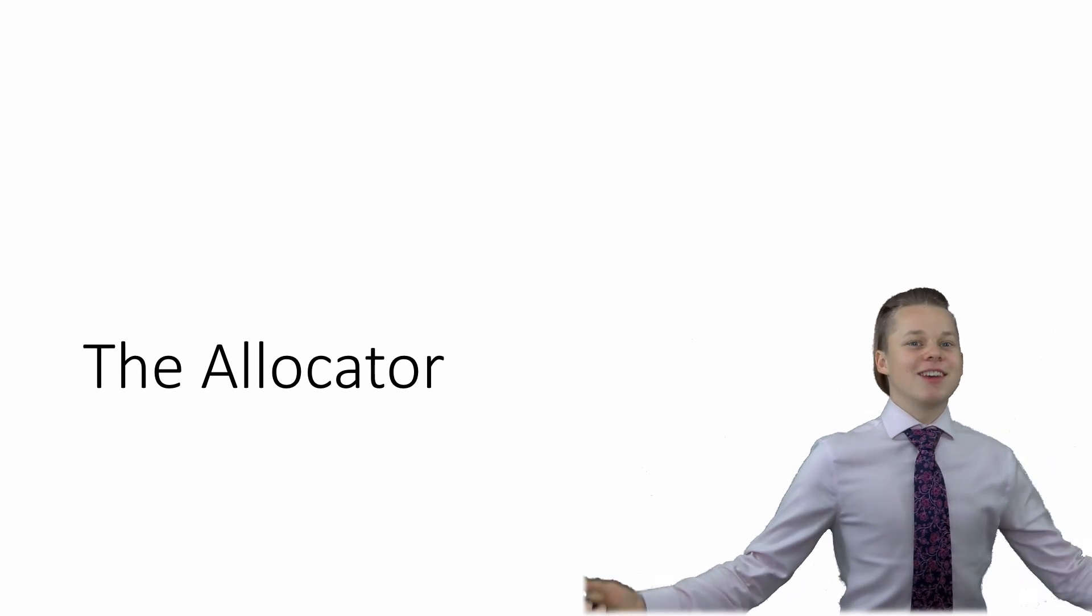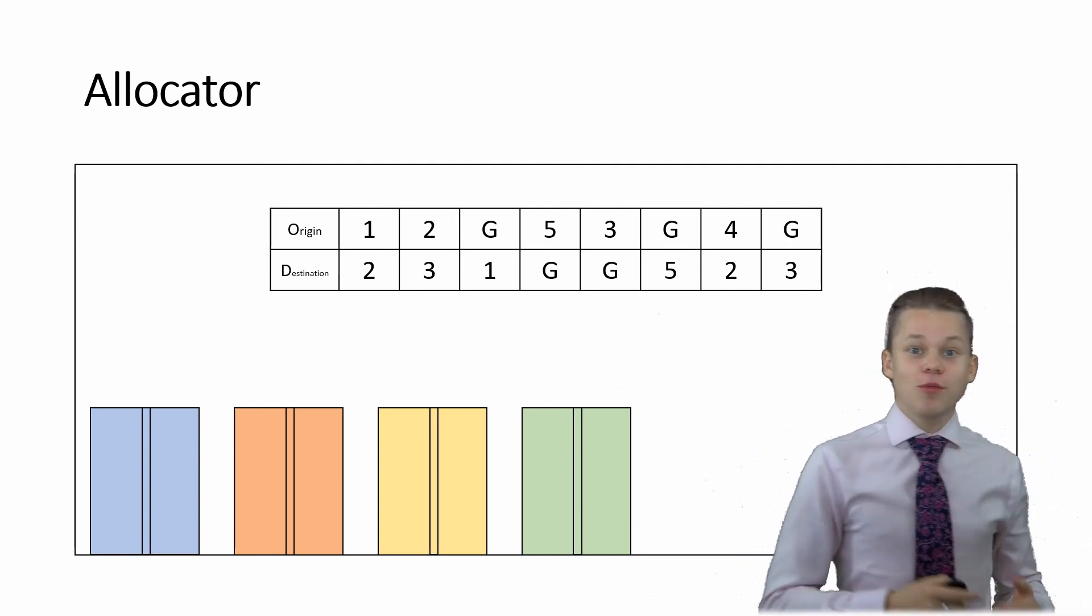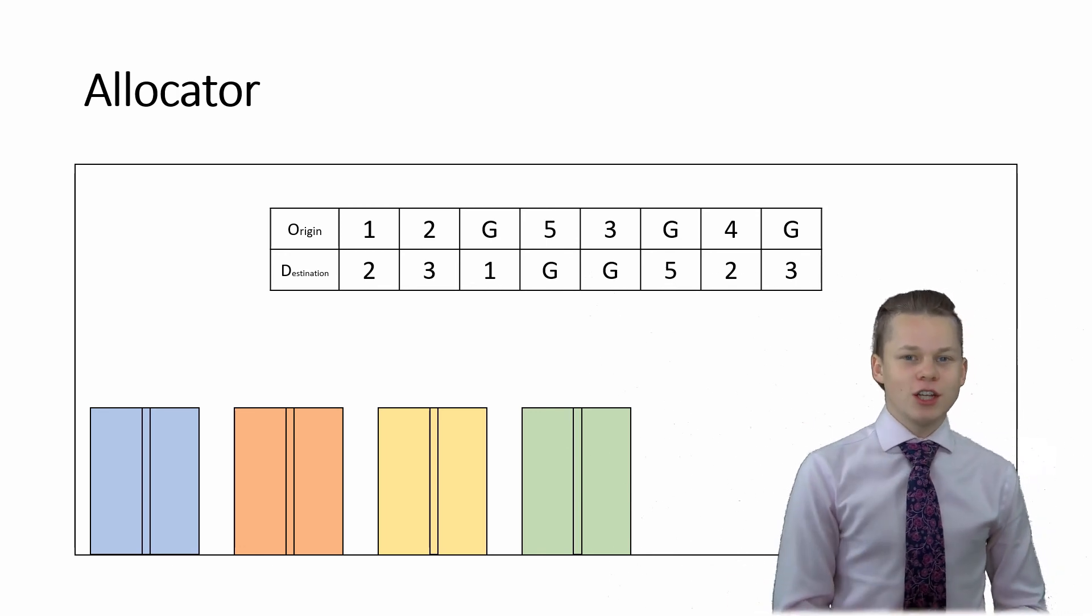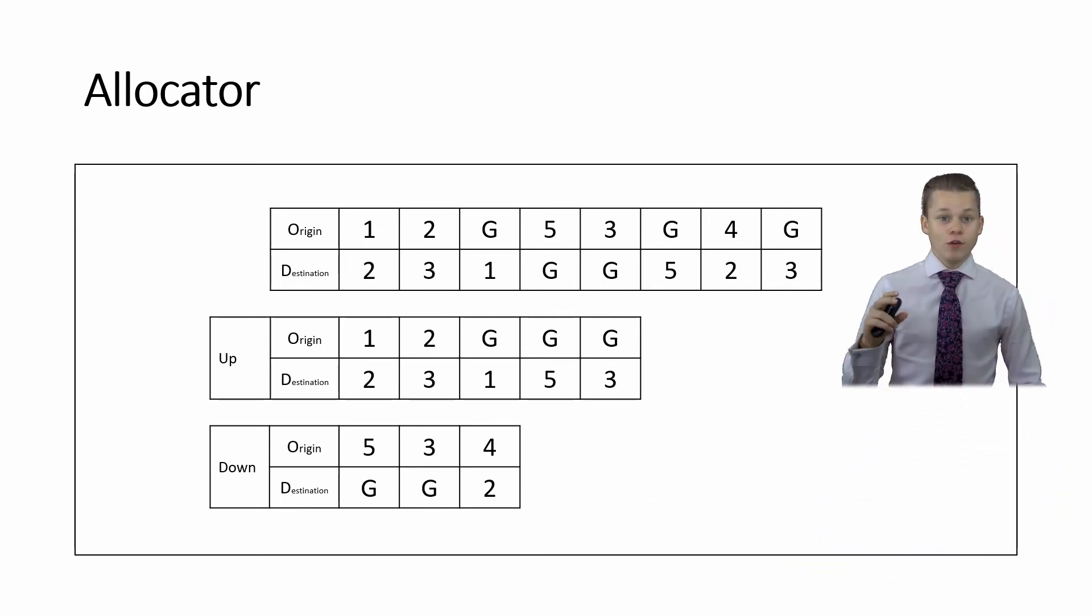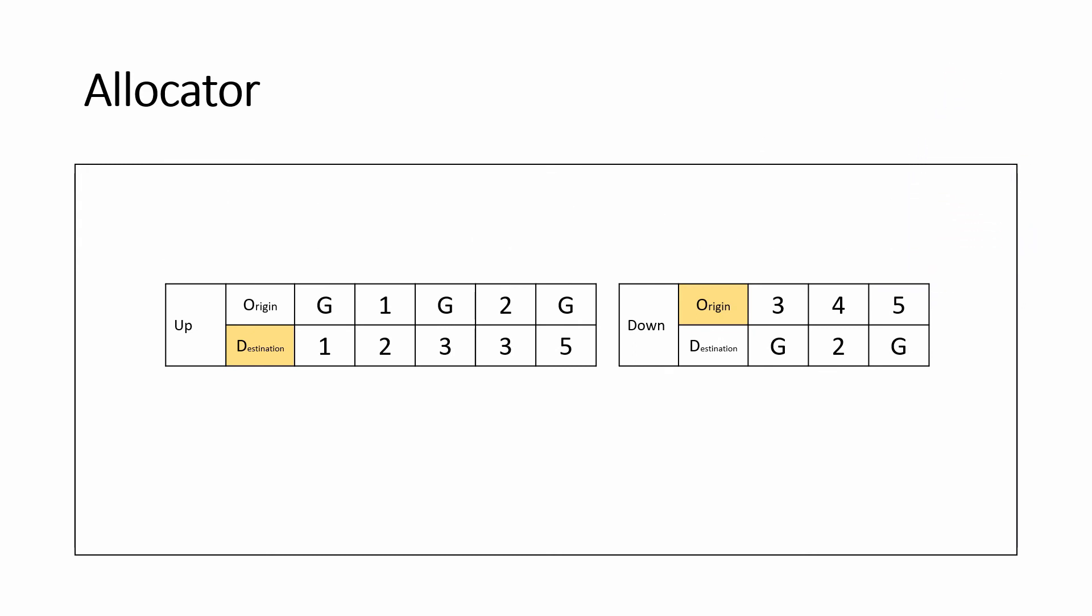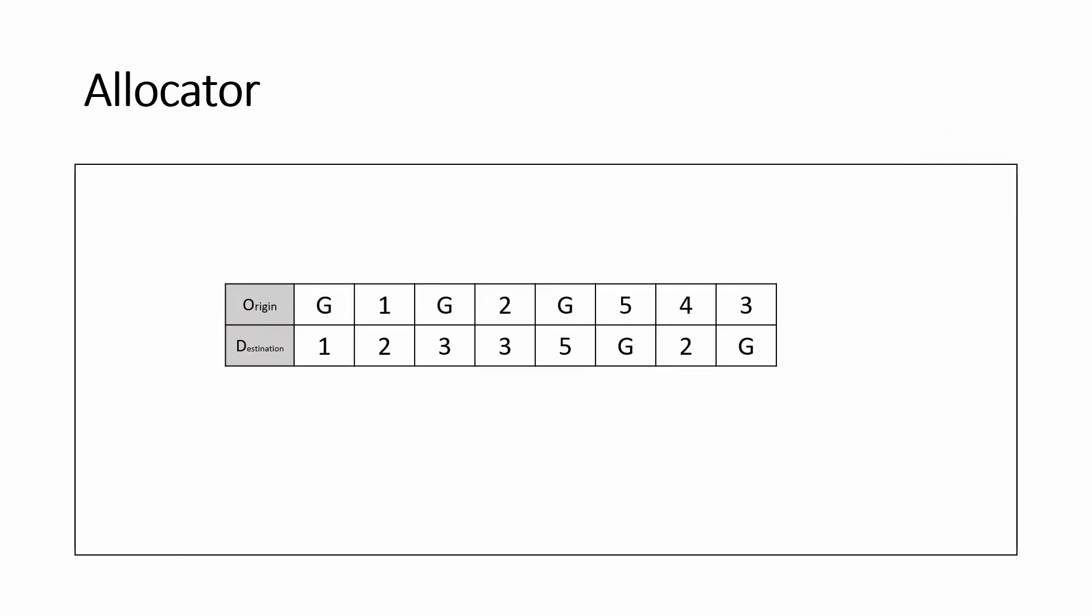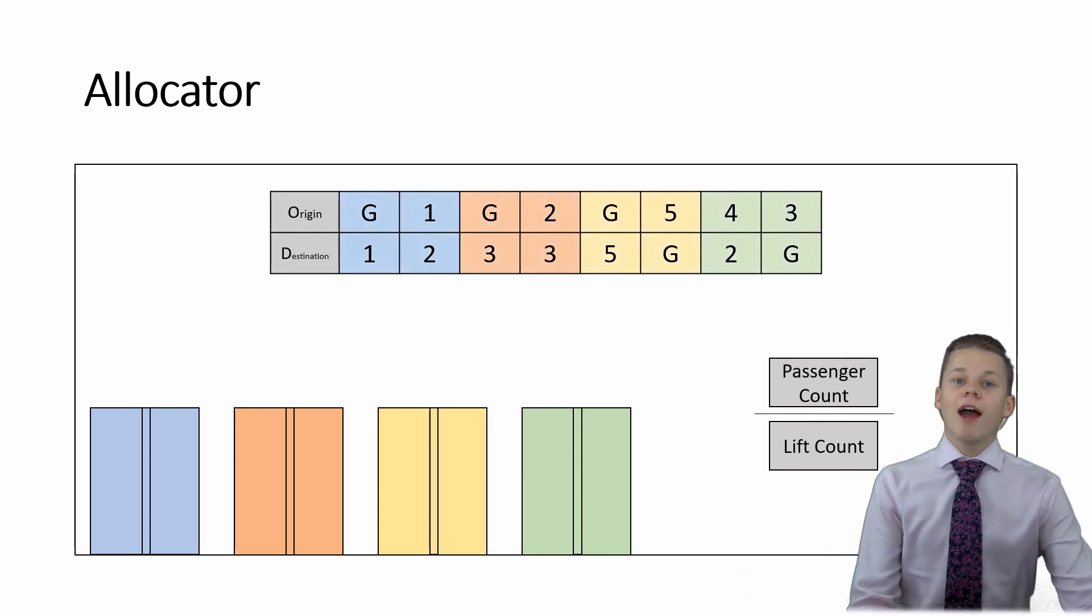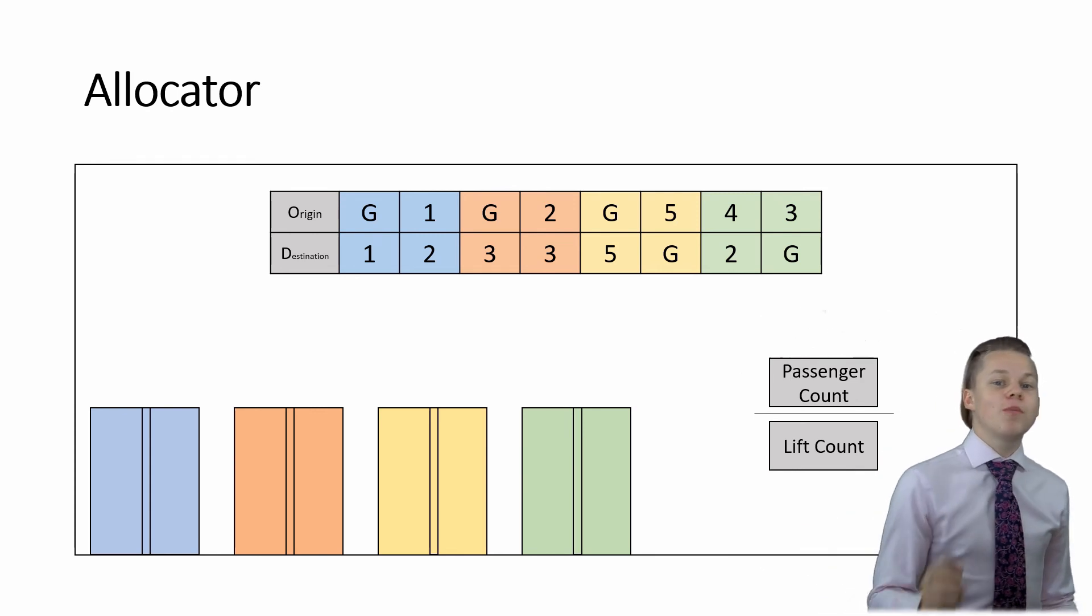Introducing the allocator. It's like a dispatcher but way easier. The idea of an allocator is to allocate these lifts which are all starting at identical positions to these passengers who have already entered their origin and destination based on some kind of logic. The first step is to separate the up passengers and the down passengers into two lists. Our up list is sorted by destination and our down list is sorted by origin. The down list is then reversed and the two lists are concatenated. So eight passengers four lifts that's two passengers a lift and thus we have a logical transparent allocation routine with no dispatcher related complications.